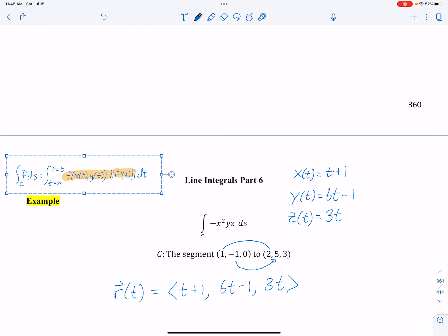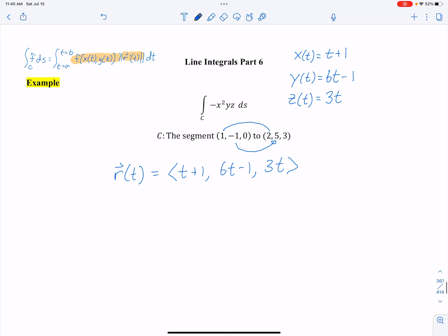We need to find r' magnitude. So I need to work my way up to that, giving an r'. And I got 1, 6, 3. r' of t magnitude is the square root of, I'm just going to give you this number, it's 46. We just square each one and add them together.